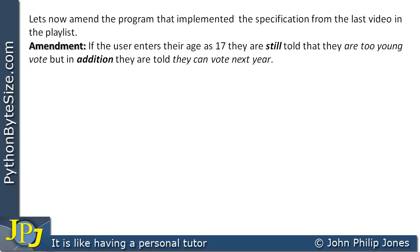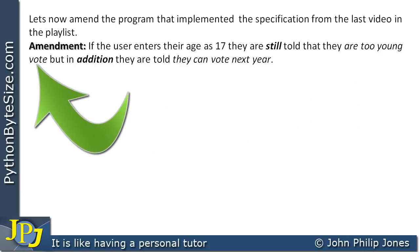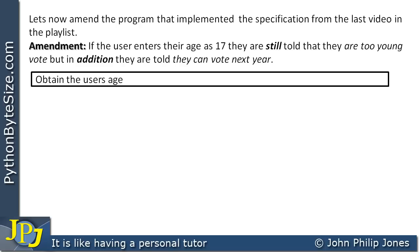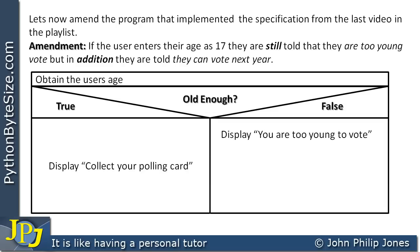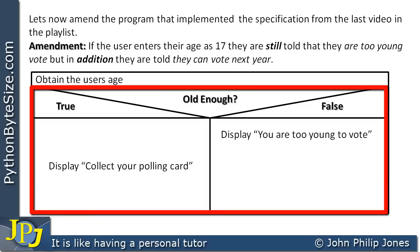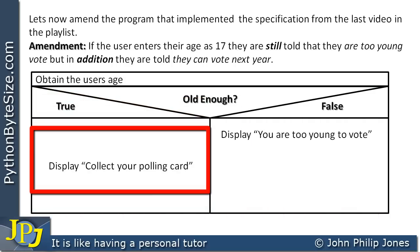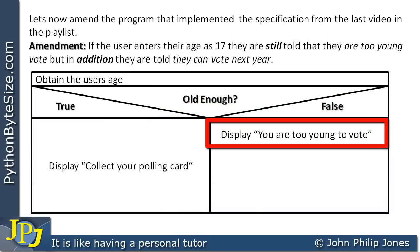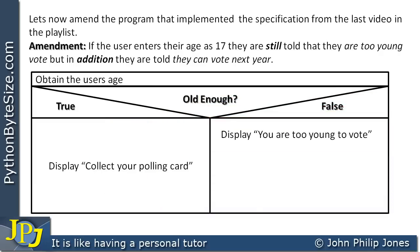Here we can see the amendment: if the user enters an age of 17, they are still told they are too young to vote, but in addition they are told they can vote next year. The first step is to obtain the user's age, then we follow that with a selection construct. There are two routes: the true route where we display 'collect your polling card', and the false route where we display 'you are too young to vote'.